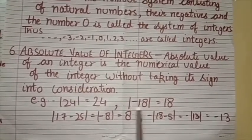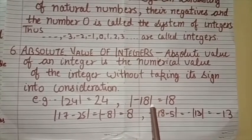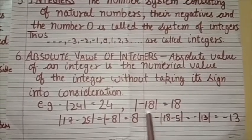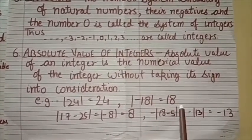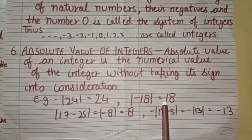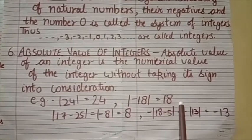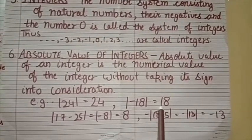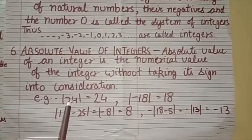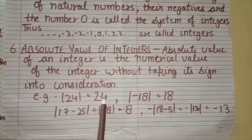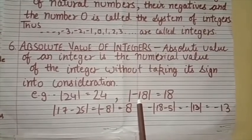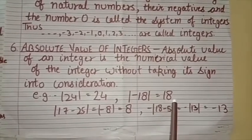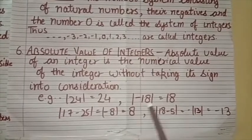लेकिन देखें absolute value of minus 18. Negative value है — minus 18. तो इसकी absolute value find करेंगे तो ये क्या हो जाएगी? Plus positive 18. Minus का sign हट जाएगा — without sign, only 18. तो minus 18 की absolute value होगी 18, positive 18. तो positive की absolute value positive आती है, और negative की भी absolute value positive आती है। इसलिए absolute value of an integer is the numerical value without taking its sign.